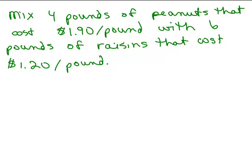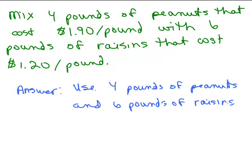So the question was, how many pounds of peanuts and how many pounds of raisins should he use? So he would mix the 4 pounds of peanuts that cost $1.90 per pound with 6 pounds of raisins that cost $1.20 per pound. That would be sort of writing it in a sentence. You might just write something depending on how your teacher prefers you to write your answers. Now if the question would have just said how many pounds of peanuts, then you would have said use 4 pounds of peanuts, or how many pounds of raisins, you would just say 6 pounds of raisins.